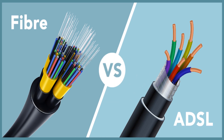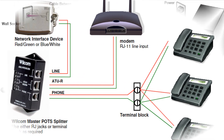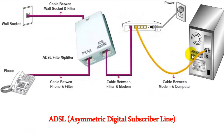ADSL uses the existing copper wires that are installed for the telephone systems to deliver high-rate digital data. It can provide customers with high-speed data services even before switching to fiber optics. The asymmetric ADSL connection is due to its different capacity to download and upload.